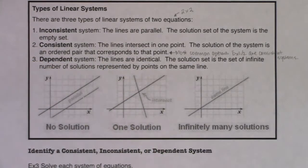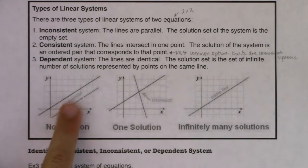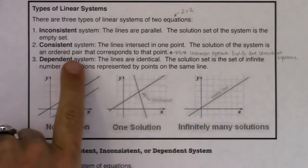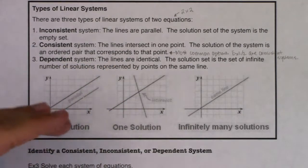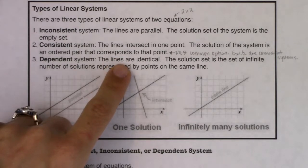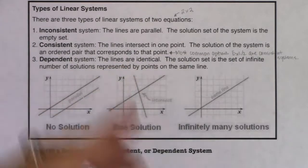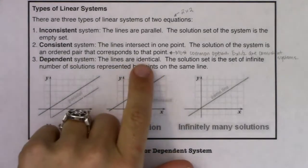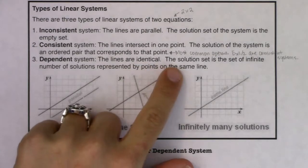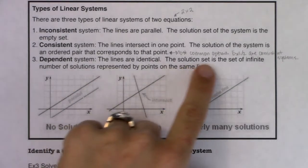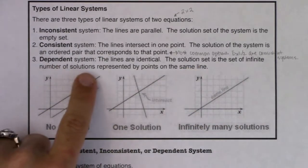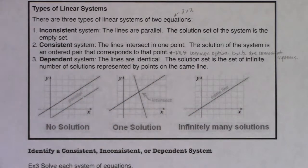There are times though when you don't have parallel lines, you don't have intersecting lines, but you have something called a dependent system. This one is when I give you a system of equations — two equations — and the lines are actually identical, meaning one is a multiple of the other. You just might not see it initially, but the algebra will present itself. When the lines are identical, it means the solution set is the set of an infinite number of solutions represented by points on the same line.